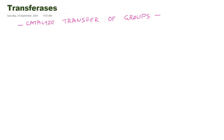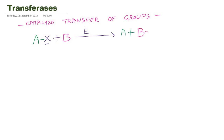The reaction catalyzed by Transferases works like this: suppose a molecule with a specific group, say for example X, reacts with another molecule B with the help of the enzyme Transferase. This group can be transferred to molecule B, and now molecule B will be acquiring this group.